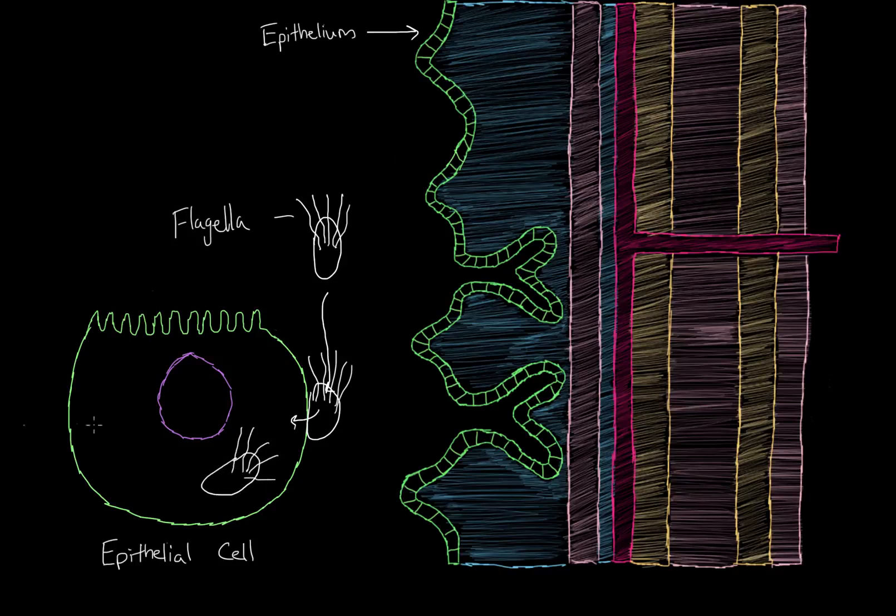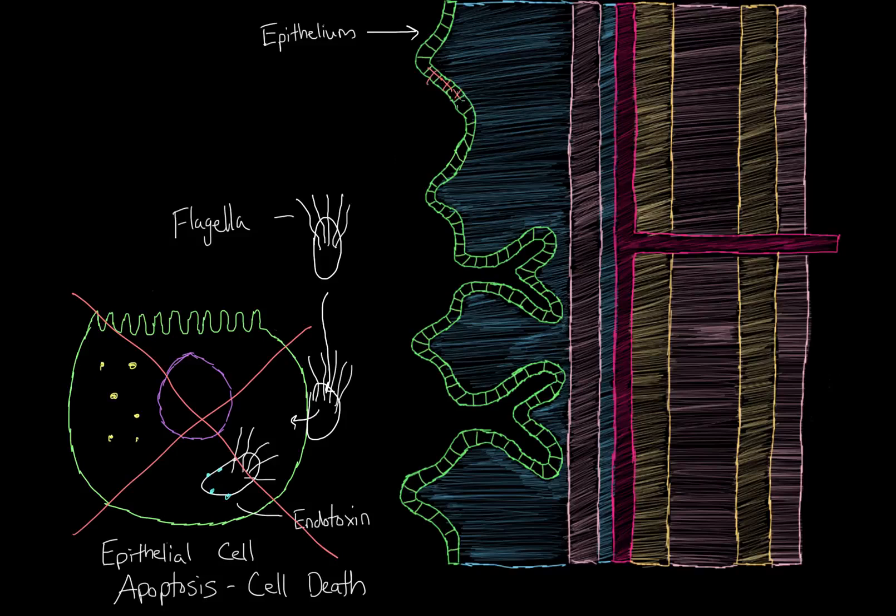Now remember that a lot of bacteria have this structure around them called a cell wall. And associated with that cell wall, in this case, is a chemical called an endotoxin. That endotoxin will trigger the release of chemicals called cytokines. And these cytokines will ultimately lead to a process known as apoptosis, which just basically means cell death. So eventually this epithelial cell will die off. And now you have all of these cells in the epithelium just dying. And remember that these cells are responsible for digesting and absorbing food. So now you can't do that anymore.